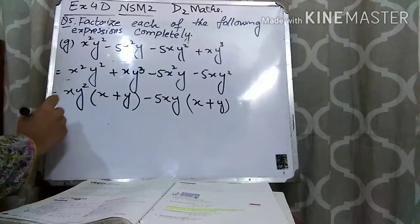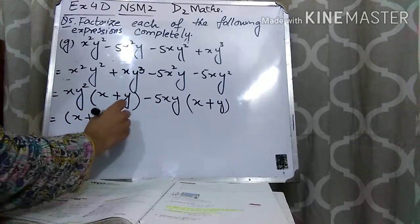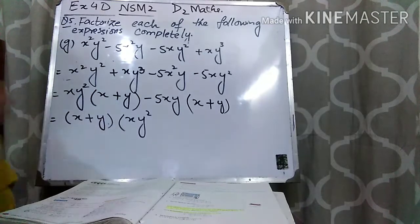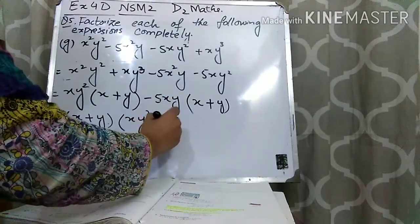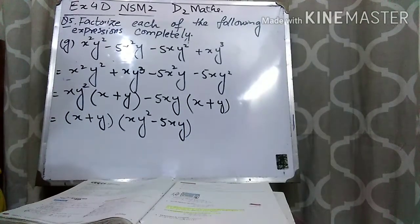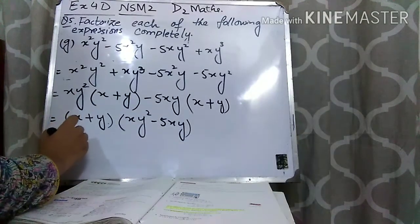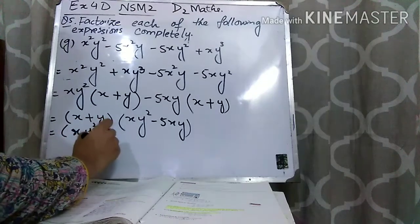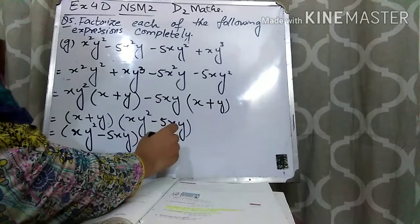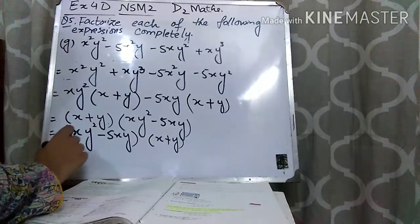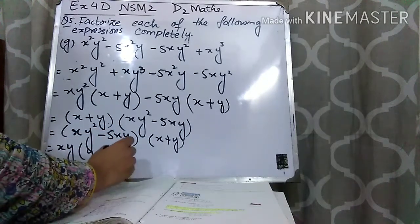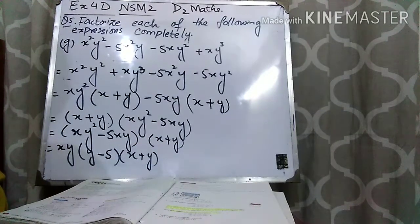Here you can see that x plus y is present in both terms, so you can take x plus y common. What is left inside? From the first term xy² is left, and from the second term 5xy is left. You can also take xy common from that bracket. Write (x plus y) at the start, take xy common: y is left from the first part, and just 5 is left from the second. So your answer is xy(y minus 5)(x plus y).